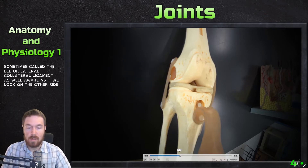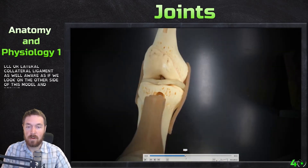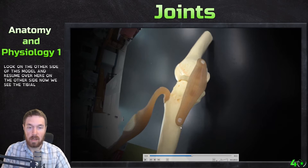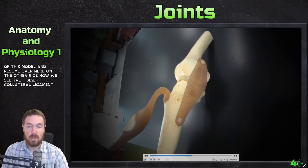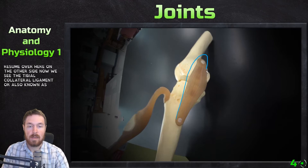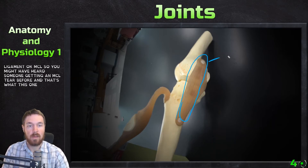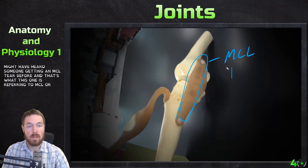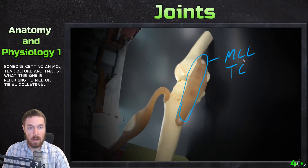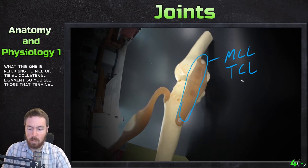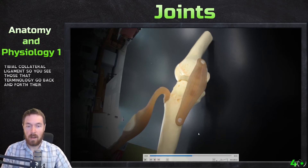If we look on the other side of the model, we can see the tibial collateral ligament, also known as the medial collateral ligament or MCL. You may have heard of someone getting an MCL tear — that's exactly what this ligament is. The terms MCL and tibial collateral ligament are used interchangeably.